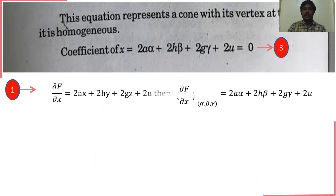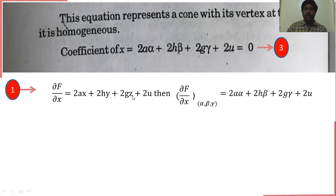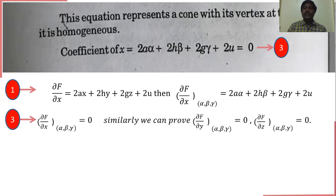From equation 1, ∂f/∂x = 2ax + 2hy + 2gz + 2u. Substituting the vertex (α, β, γ) — putting x = α, y = β, z = γ — we get 2aα + 2hβ + 2gγ + 2u, which by the above equation equals 0. That is, ∂f/∂x at (α, β, γ) = 0. Similarly, we can prove that ∂f/∂y and ∂f/∂z at (α, β, γ) are also equal to 0.